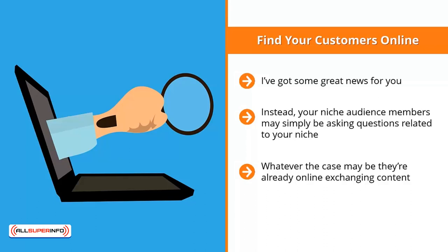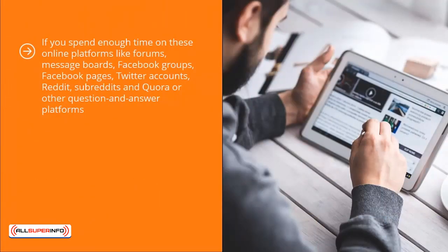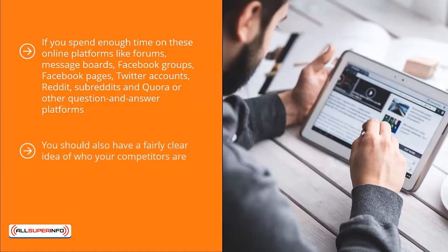Your job is to find all these areas online and listen to them. That is the main key for consumer intelligence. Pay attention to the words that they are using, the solutions they are already talking about, and the shortcomings of those solutions. If you spend enough time on online platforms like forums, message boards, Facebook groups, Facebook pages, Twitter accounts, Reddit, subreddits, and Quora or other question and answer platforms, you should have a clear understanding of who your audience members are and their expectations.